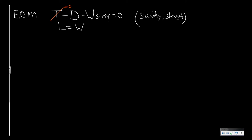So that means that if we rewrite the first equation then we find that the sine of gamma is equal to minus drag divided by the aircraft weight. And since lift is equal to the weight we can also state that this is minus drag divided by the lift.